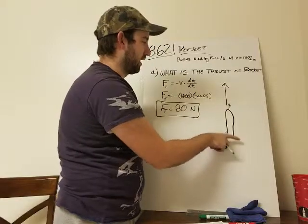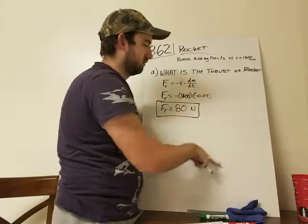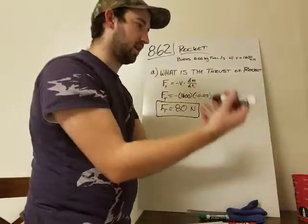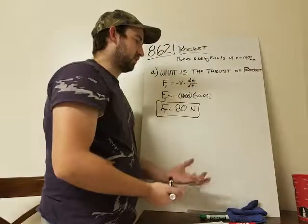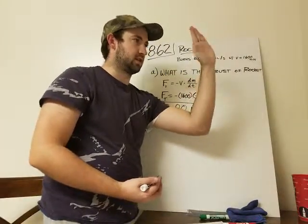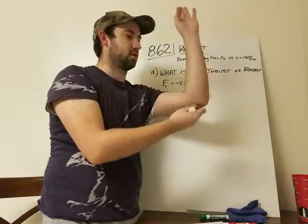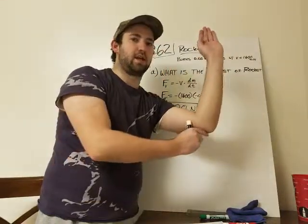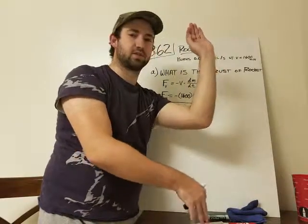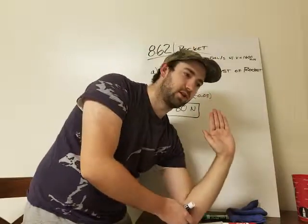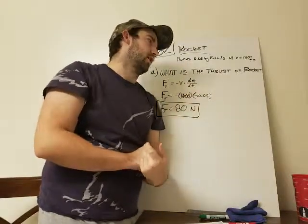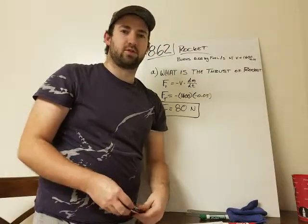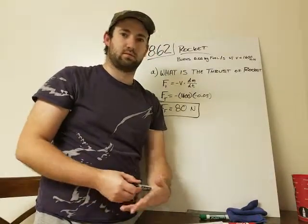A good example of that is if you watch the most recent Falcon Heavy launch. When the boosters come back down, they come back down standing up. So this would be the top of the rocket and this is the bottom. And as it comes back almost to the ground, that engine produces a lot of thrust and that's what's able to slow it to allow it to land vertically. So that's a great example of how these rockets are able to brake and turn and things like that.